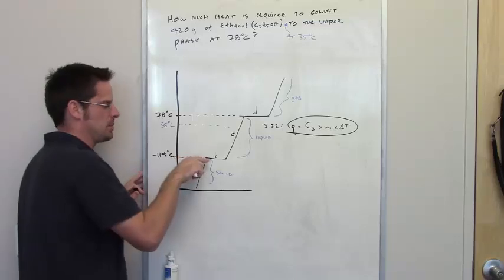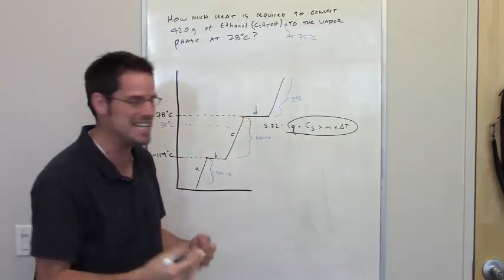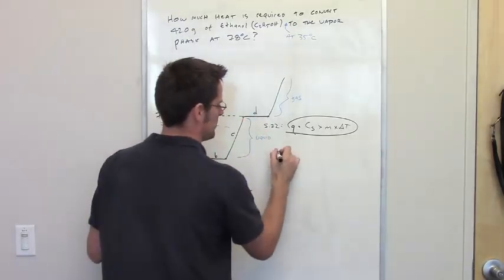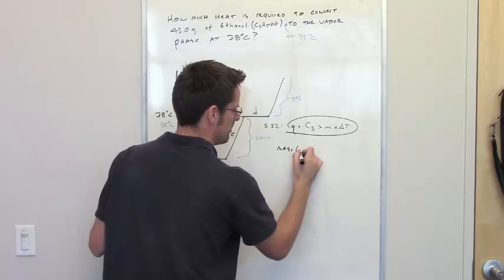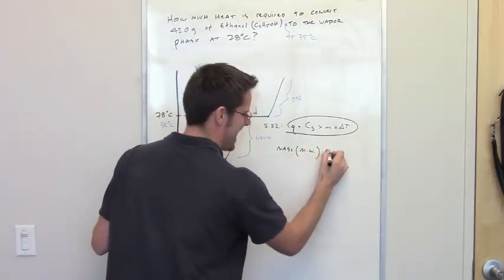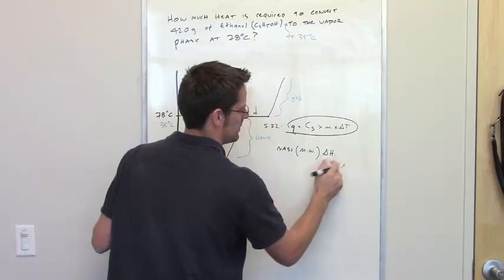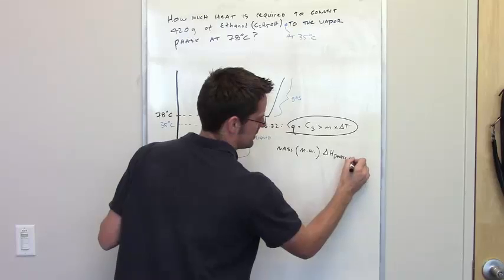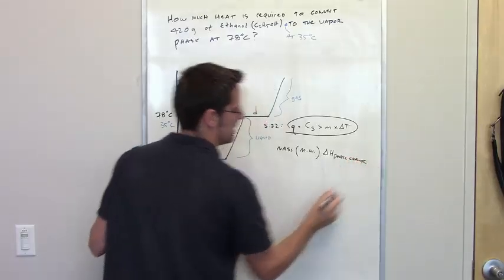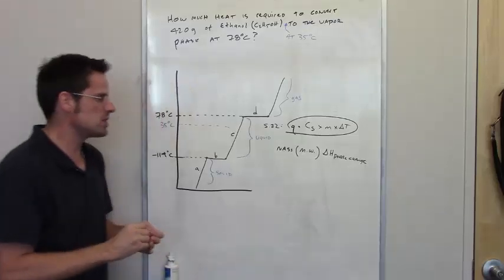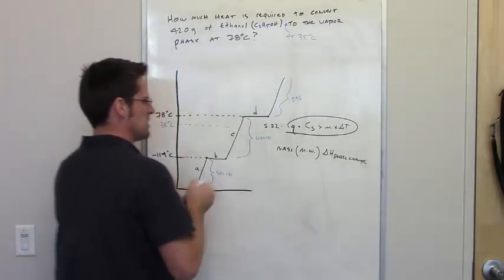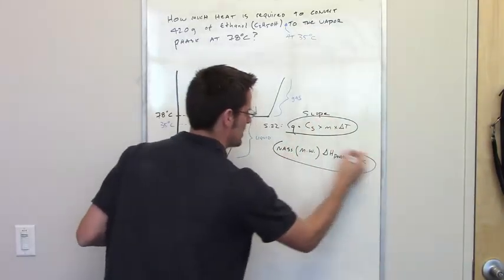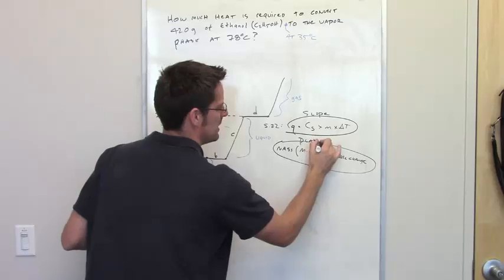Any time you're going across a plateau — either plateau B or plateau D — you're going to multiply the mass by the molecular weight and then multiply that by the delta H of the phase change. If it's vaporization, that's one phase change; if it's melting, it's another. Those are the two equations: one for slopes, one for plateaus.